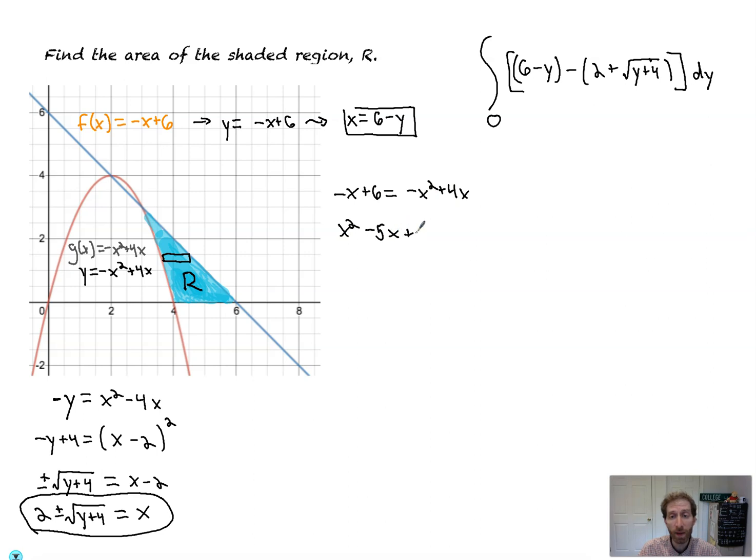It's going to be minus 5x and plus 6 equal to 0. And then I'm going to factor.